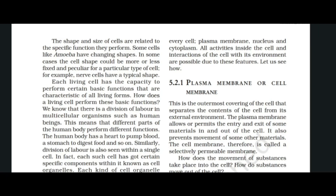The shape and size of cells are related to the specific function they perform. Some cells, like amoeba, have changing shapes. In some cases, the cell shape could be more or less fixed and peculiar for a particular type of cell. For example, nerve cells have a typical shape.